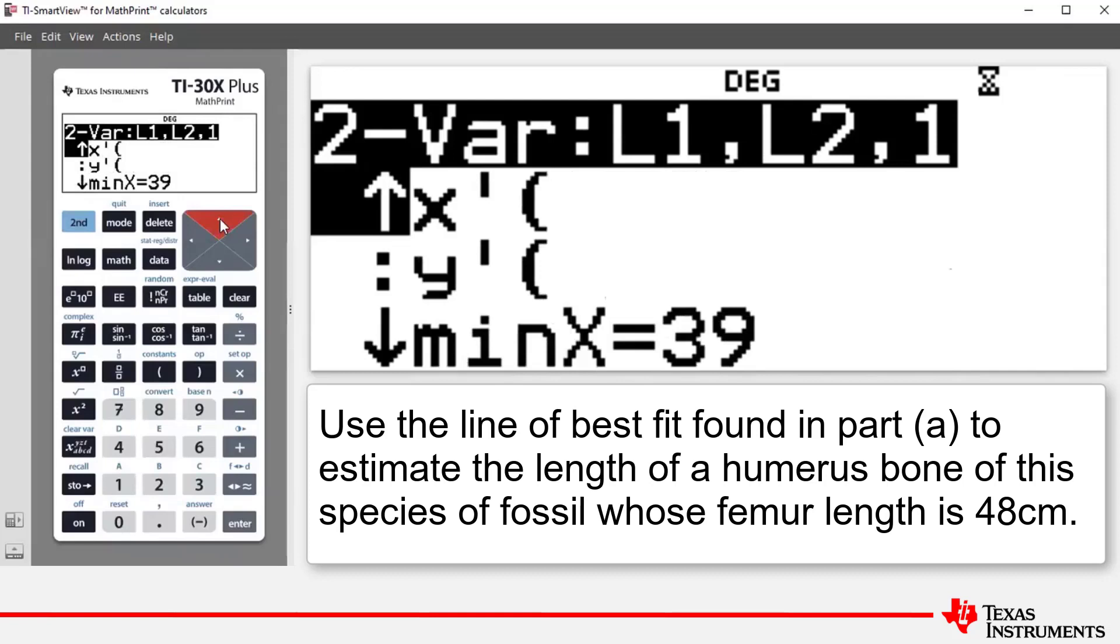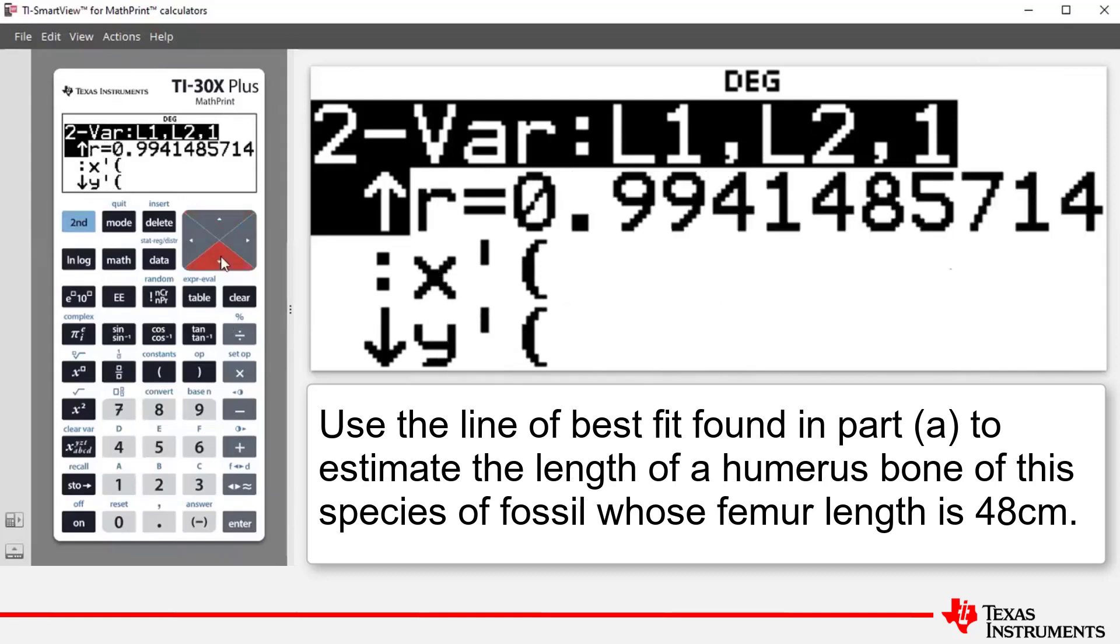we find Y dashed open bracket. Now Y dashed open bracket allows us to use A and B to calculate a predicted Y value when you input an X value. So if we now press enter,